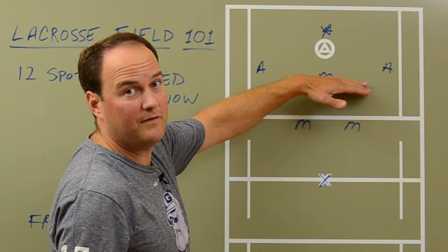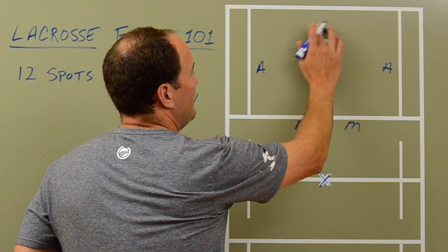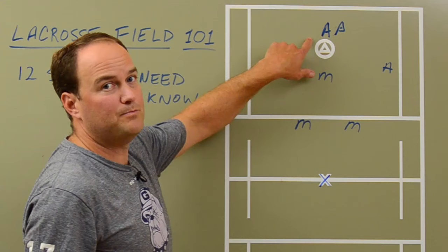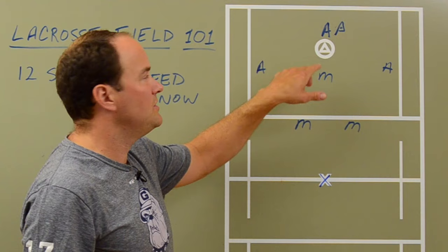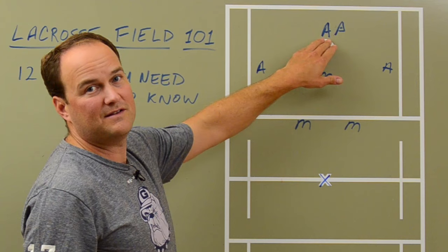The X area behind the cage is where the attackman has the ball. This is typically where you'd have your best ball-handling attackman — the person that's going to probably break down the defense off the dodge, but also be one of your best feeders looking for guys off ball. This is where your most dynamic attackman is going to play.